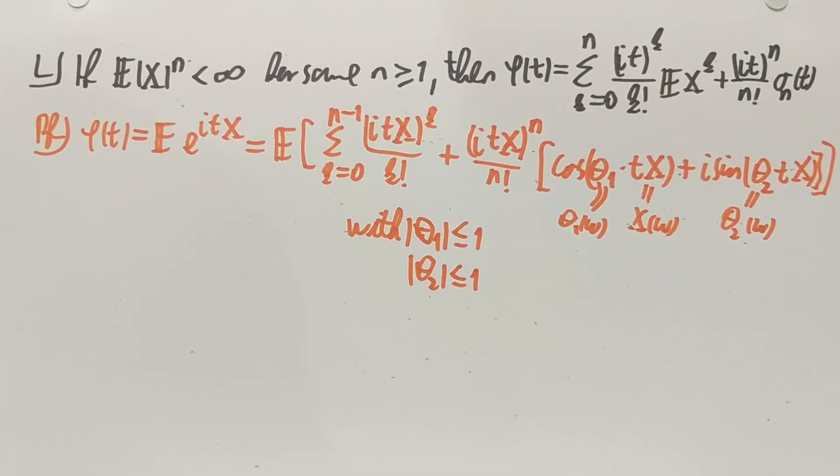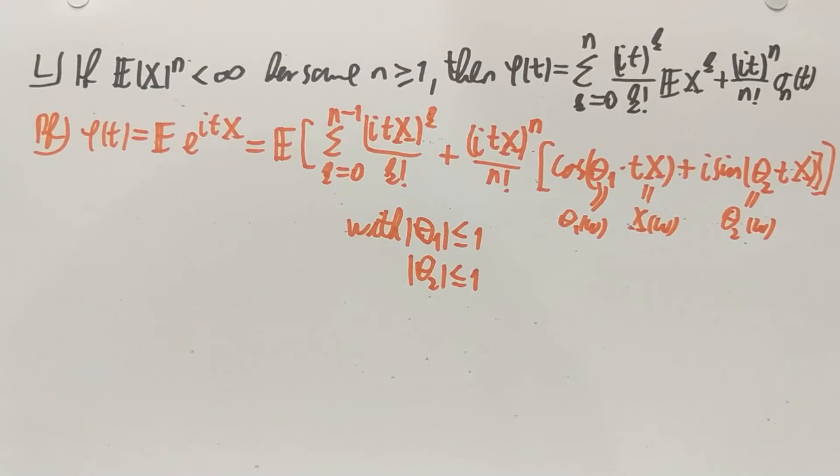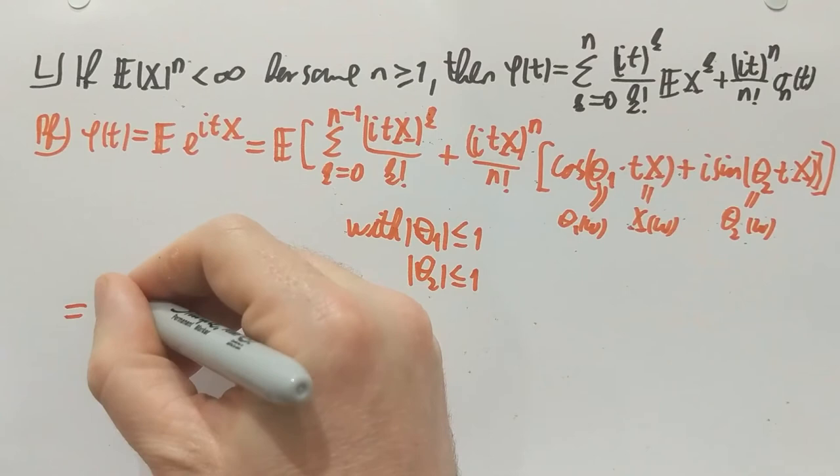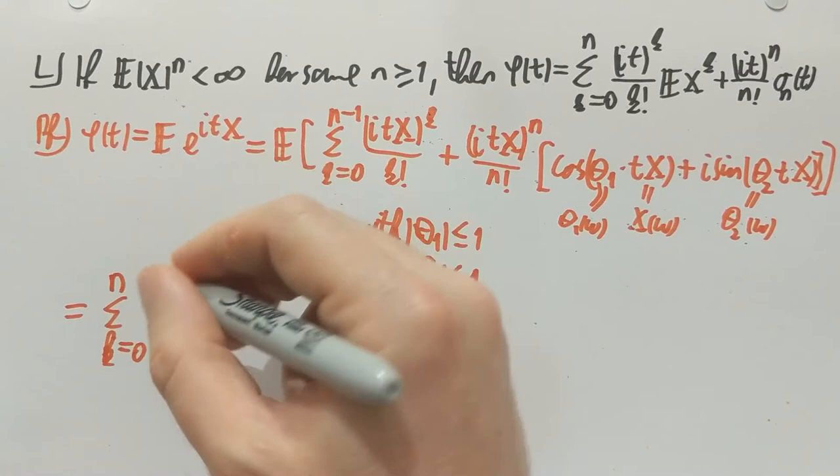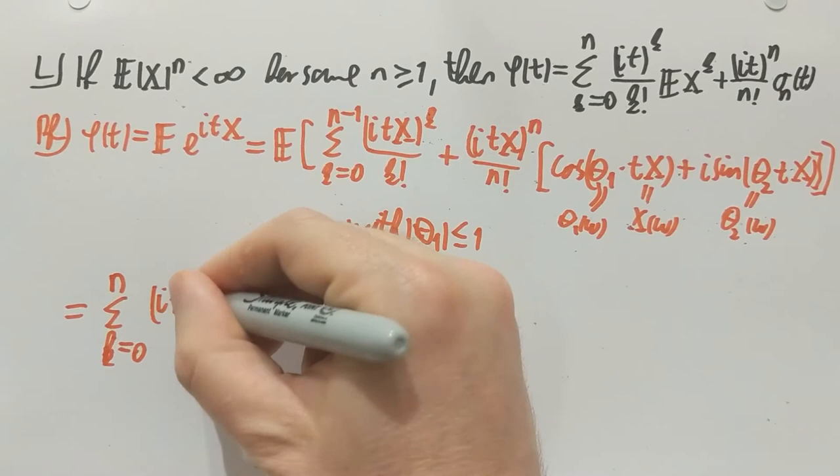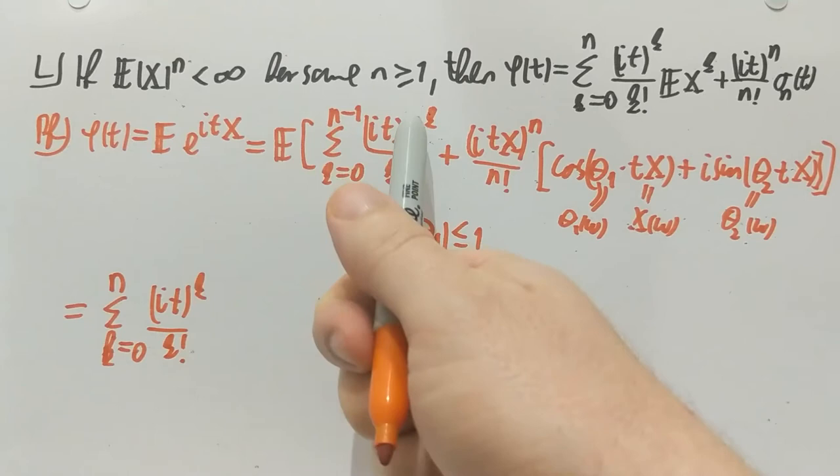Now we're dealing with a finite sum here. Finite sums always swap with expectations. So this is further equal to the sum, k goes from zero to n. I'm going to write this. Let's comment on this. Let's do it up to n. It to the k over k factorial. So far I'm just copying that bit.